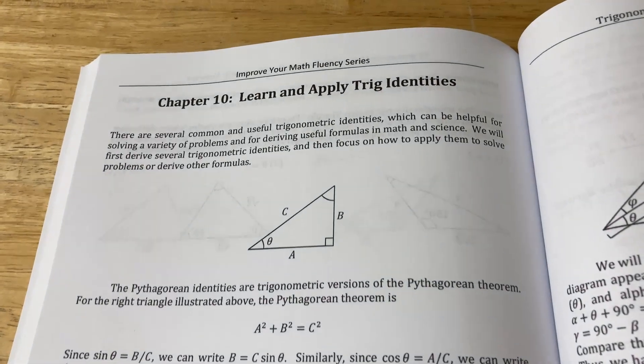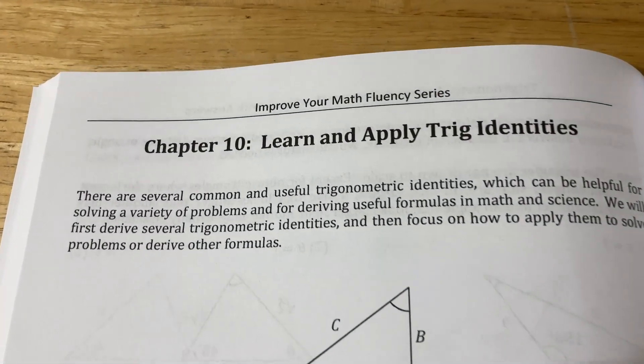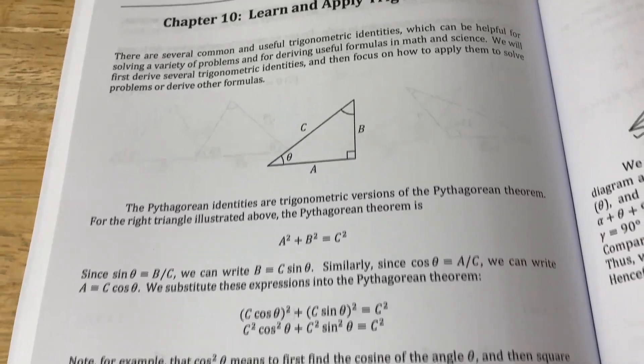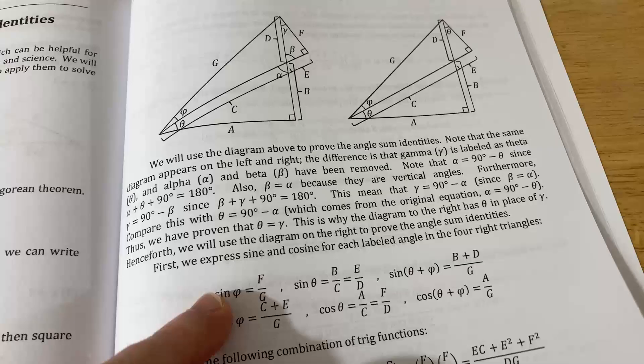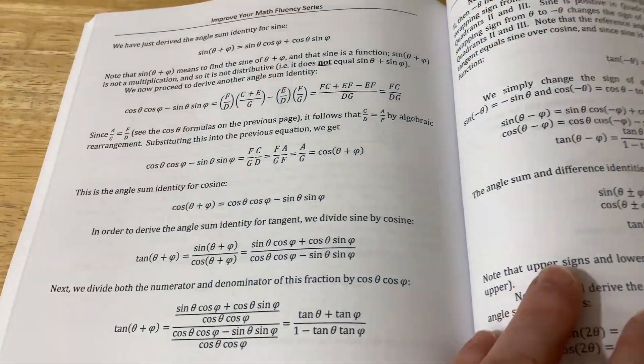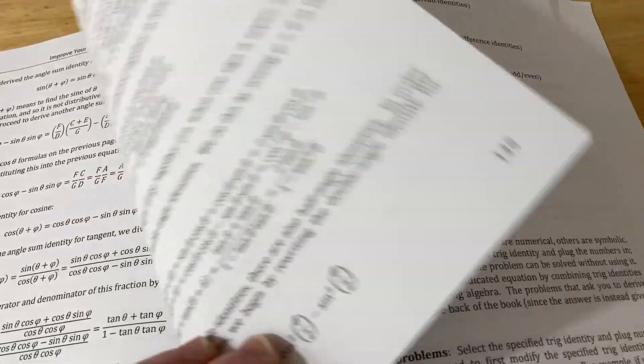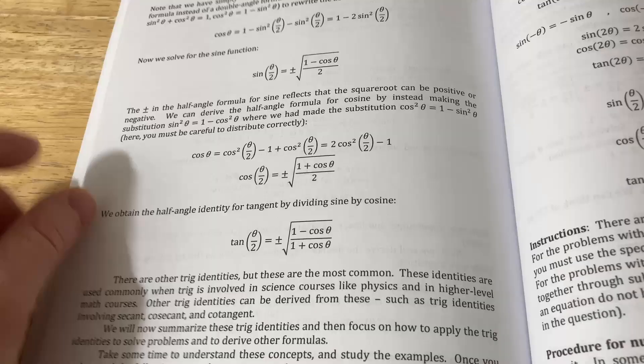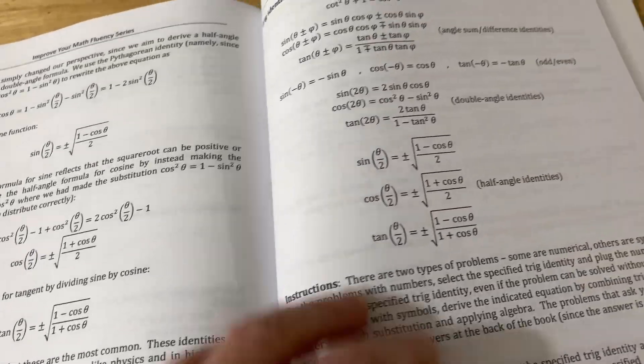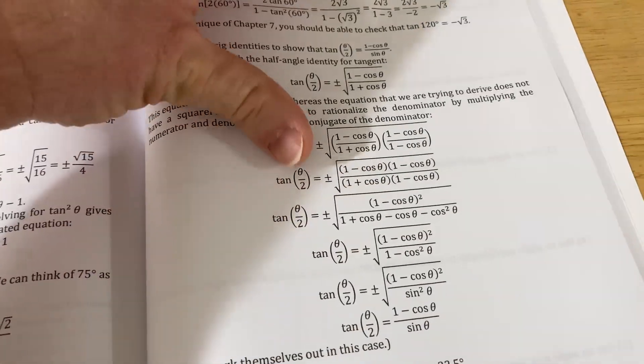This is perhaps one of the heaviest sections in this book. It's chapter 10, learn and apply trig identities. Look at all of this math. So he goes through and just shows you a lot of trig identities and how to come up with them. Several pages here. Usually in most chapters, it's just one or two pages. These are really important identities. This is really useful. And it gets even better. Look at all of these examples.